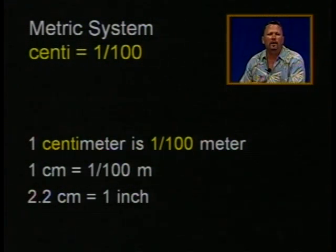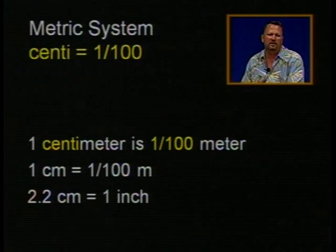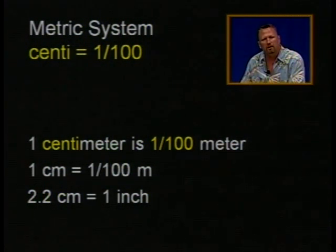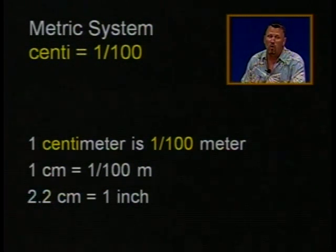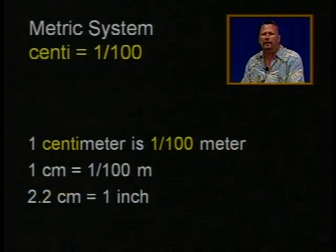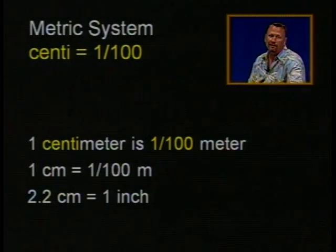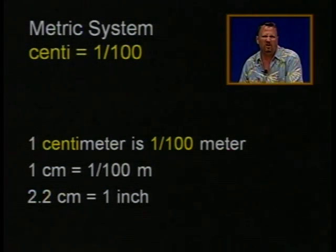Centi means one one-hundredth. So a centimeter, which we talk about all the time, is one one-hundredth of a meter — abbreviated as one cm equals one one-hundredth of a meter. There are about 2.54 centimeters per inch, and for those doing the rocket science in this class, you need to know that 2.54 centimeters is equal to an inch.